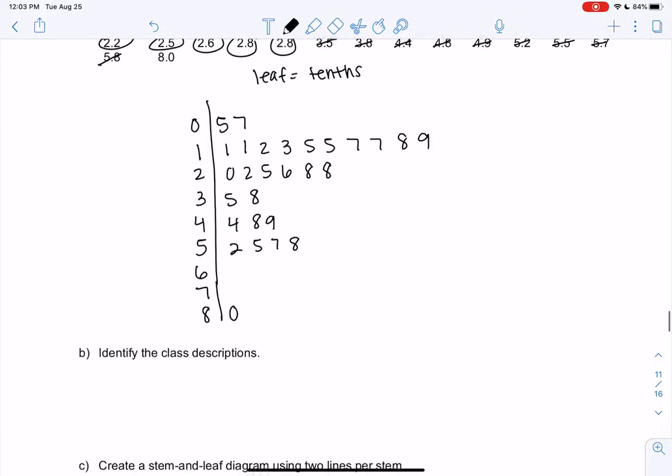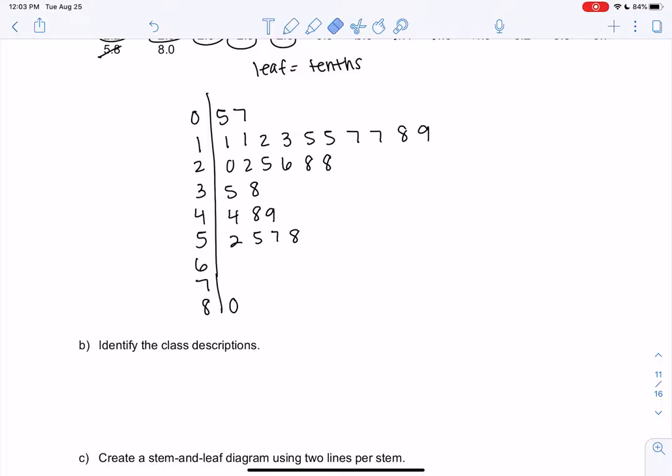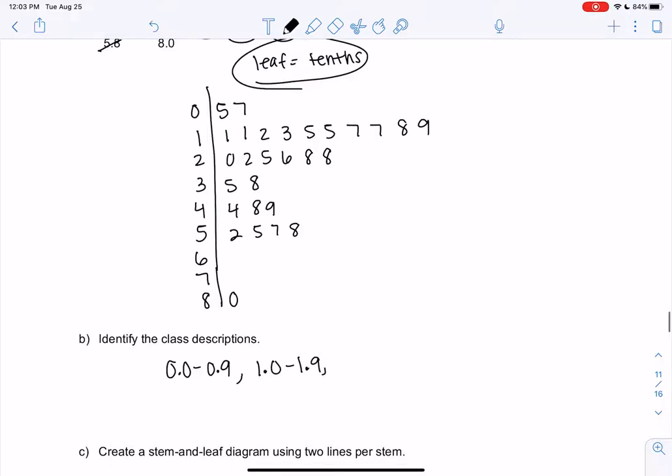So again, class descriptions are what does each row represent? Each row, the first row is 0.0 through 0.9. Remember, it's not 0 through 9 because of the decimal place. The second one, you might be tempted to say 10 through 19, but again it's 1.0 through 1.9. This one, the next one was 2.0 through 2.9, and so on. So continue all the way through 8. So 4 to 4.9, 5 to 5.9. Notice they're all the same width, that's important. And then end at 8 to 8.9. They're all the same width, they're the same size. If they're not the same size, that's misleading.